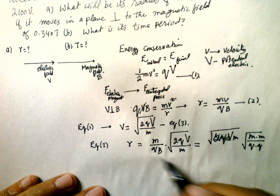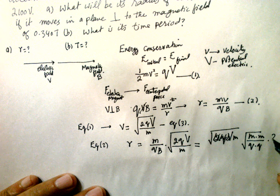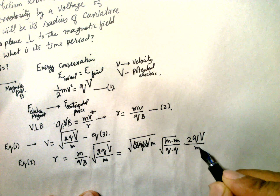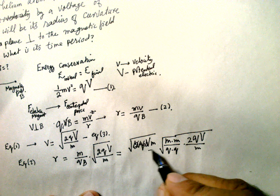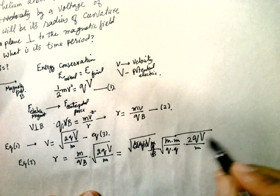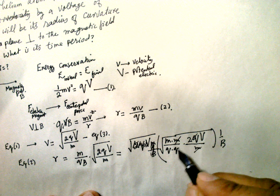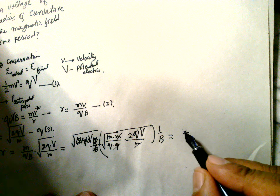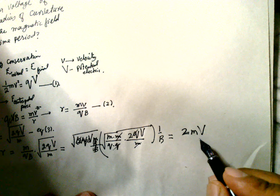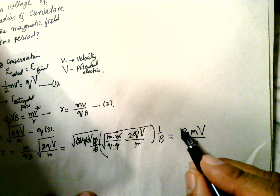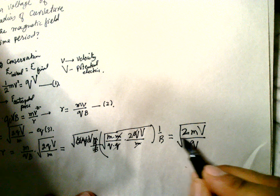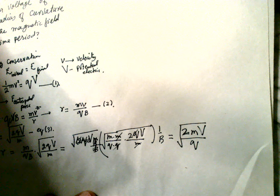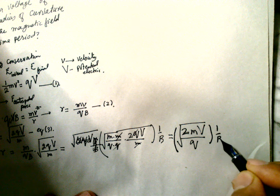Simplifying the expression: r = (m/qB) × √(2qV/m). Inside the square root, m cancels partially with m, and one factor of q cancels, giving r = (1/B) × √(2mV/q). So the final formula is r = (1/B)√(2mV/q).